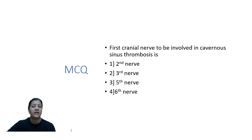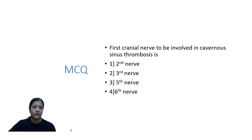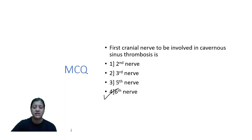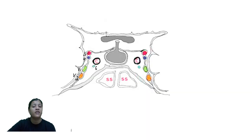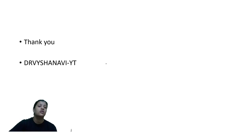The first cranial nerve to be involved in cavernous sinus thrombosis is: second, third, fifth, or sixth cranial nerve? The answer is the sixth cranial nerve. In the lateral wall of the cavernous sinus you have the third nerve, fourth nerve, ophthalmic division and maxillary division of the trigeminal nerve. Whereas the sixth nerve is within the lumen of the cavernous sinus. So the sixth nerve is the first nerve to be involved in cavernous sinus thrombosis.